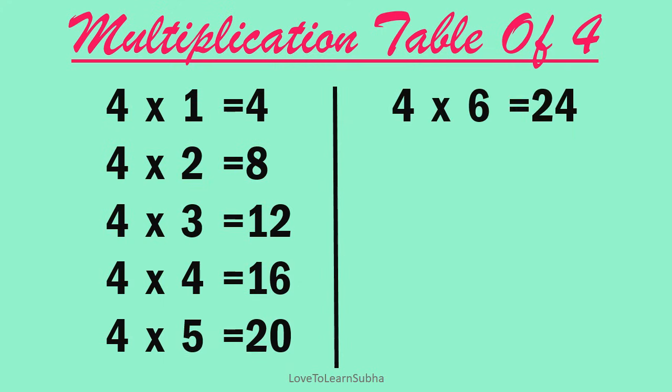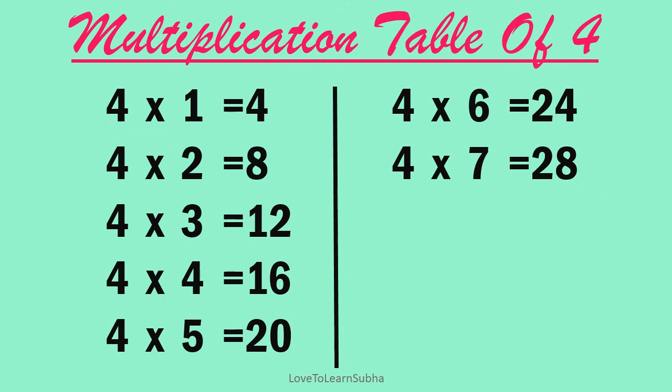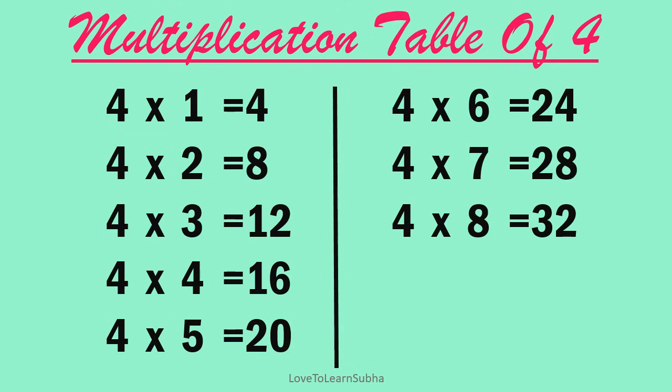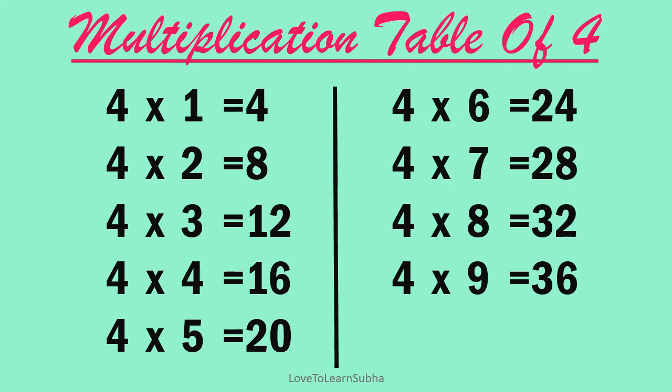4 sixes are 24, 4 sevens are 28, 4 eights are 32, 4 nines are 36, 4 tens are 40.